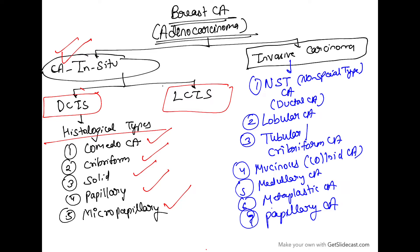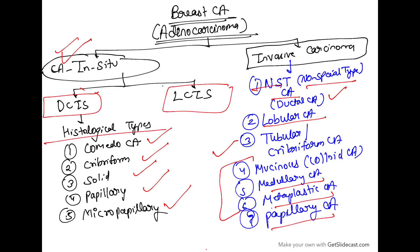Invasive breast carcinoma can be classified as NST carcinoma — that is no special type carcinoma, also known as ductal carcinoma — lobular carcinoma, tubular carcinoma or cribriform carcinoma, mucinous or colloidal carcinoma, medullary carcinoma, metaplastic carcinoma — the 3Ms: mucinous, medullary and metaplastic — and papillary carcinoma.